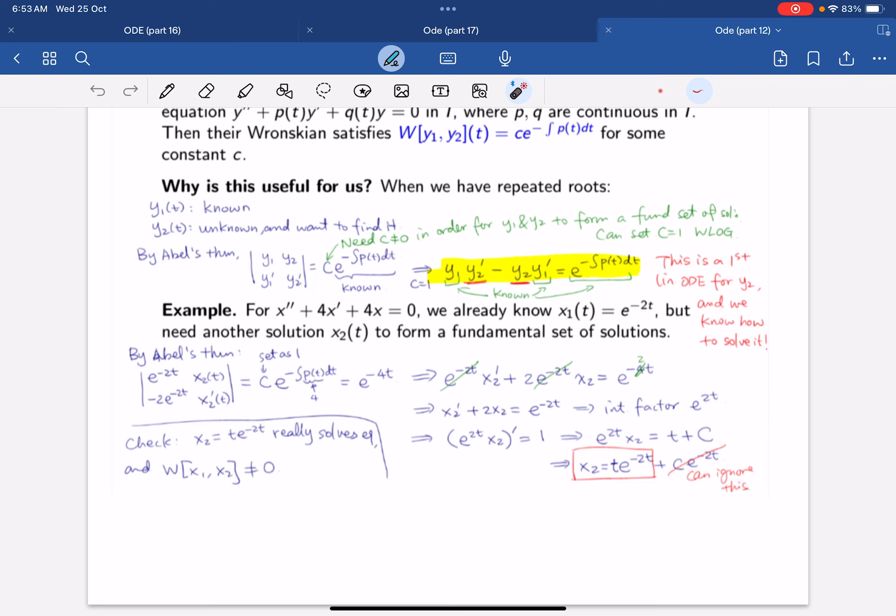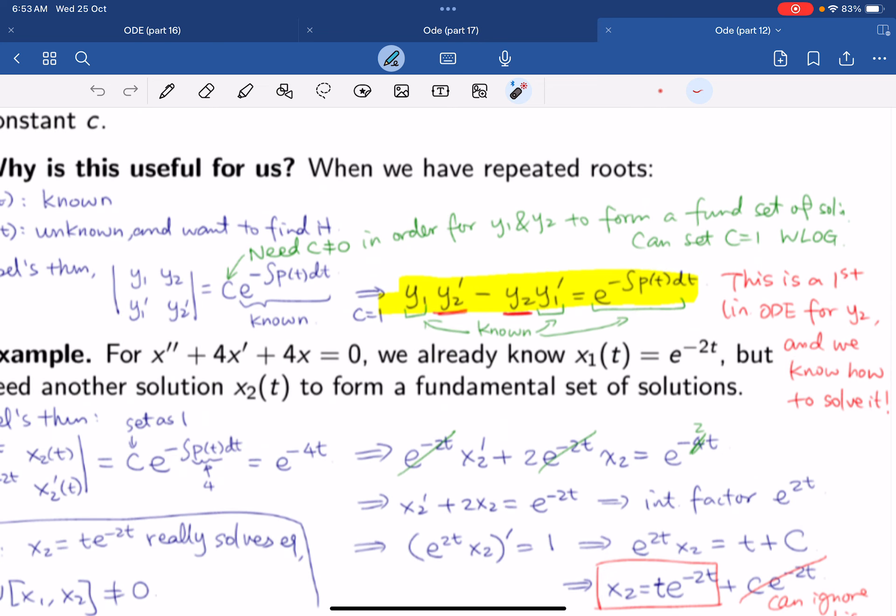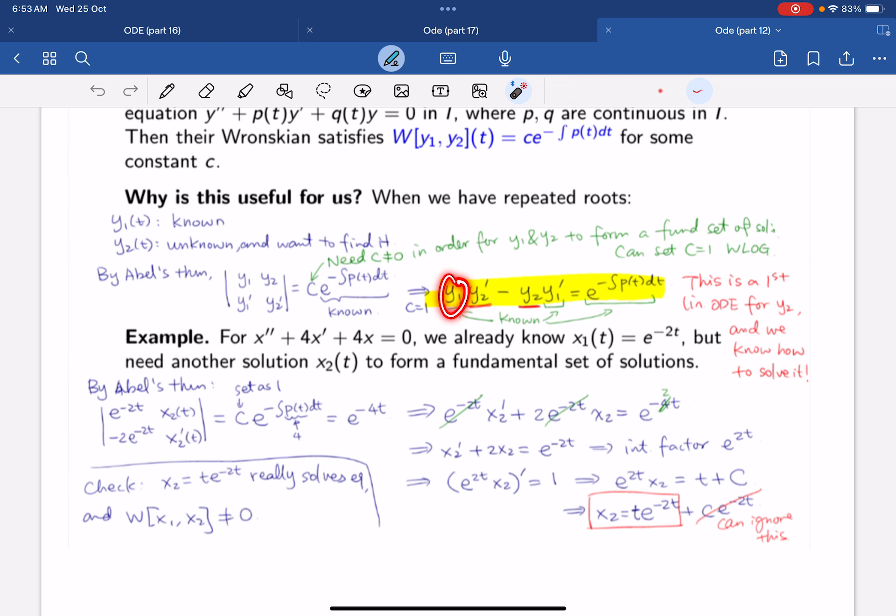C needs to be non-zero in order for this to form a fundamental solution, so we can just set c to be one. Because of that we see that y1 times y2 prime minus y2 times y1 prime must be this. This reduces the question to a first order ODE because we know y1 and y1 prime, we just don't know y2. This allows us to create a first order linear differential equation, and from here we'll know how to solve it.